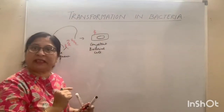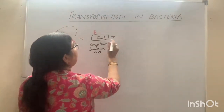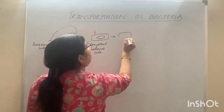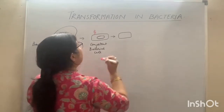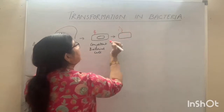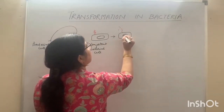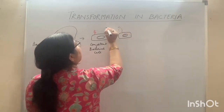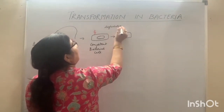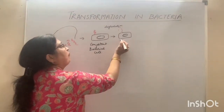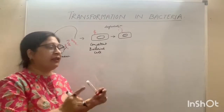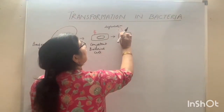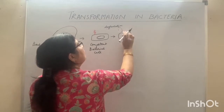When the DNA fragment binds to the cell membrane of a competent bacterial cell, the endonuclease present in the recipient cell degrades one strand of the DNA fragment. It allows only one strand to enter into the competent cell.